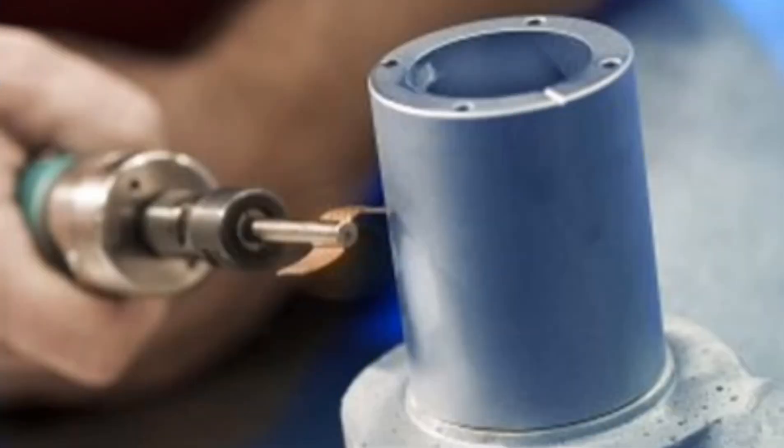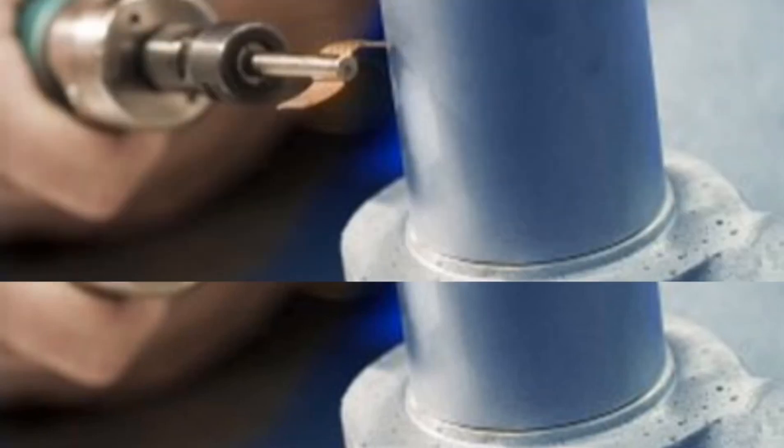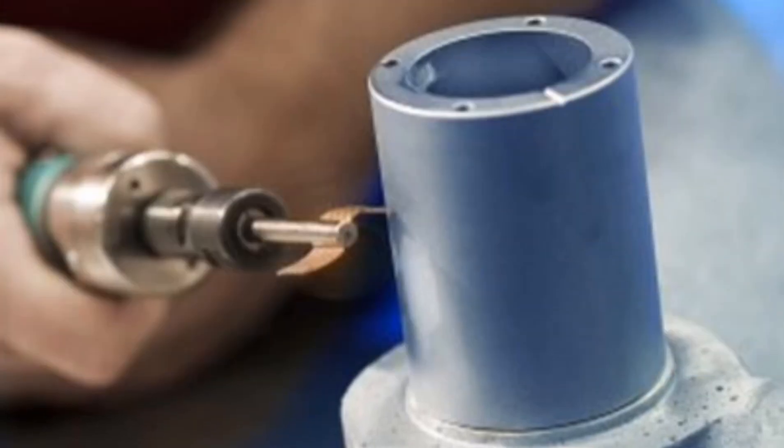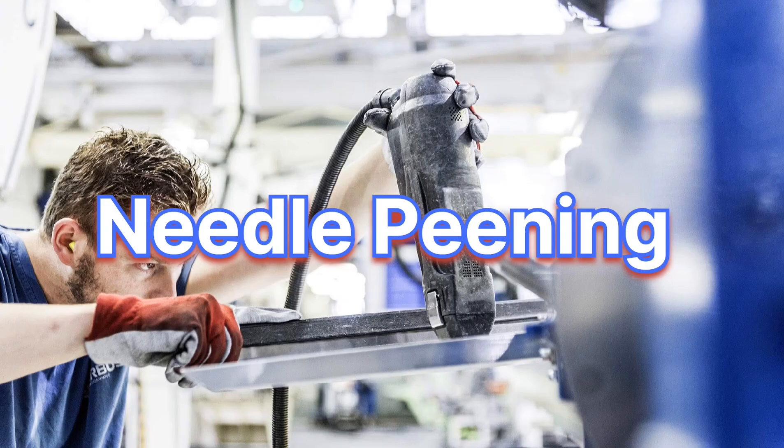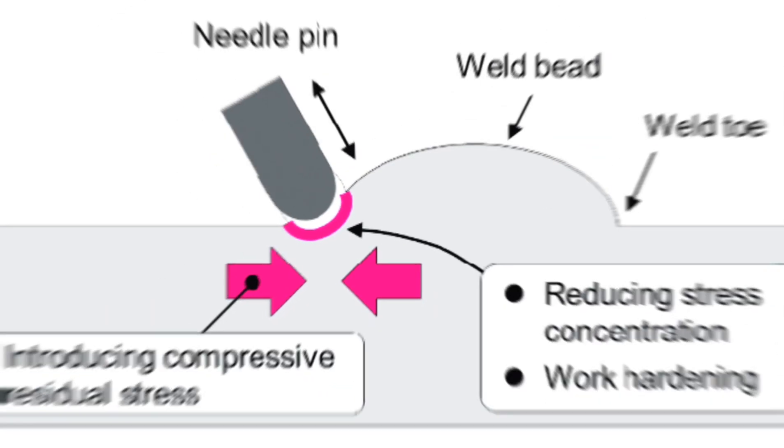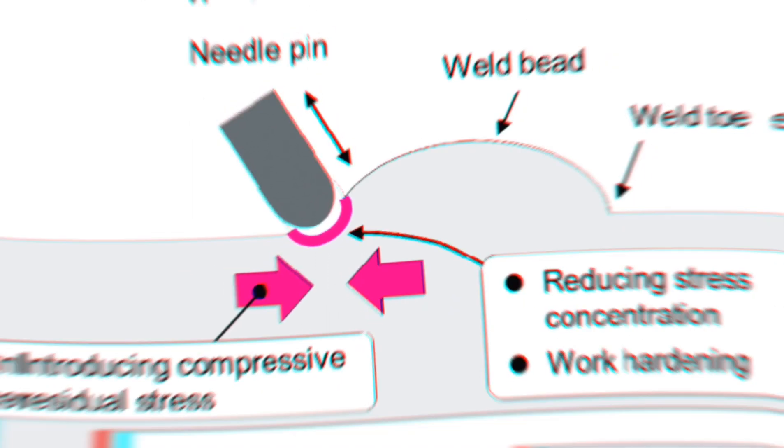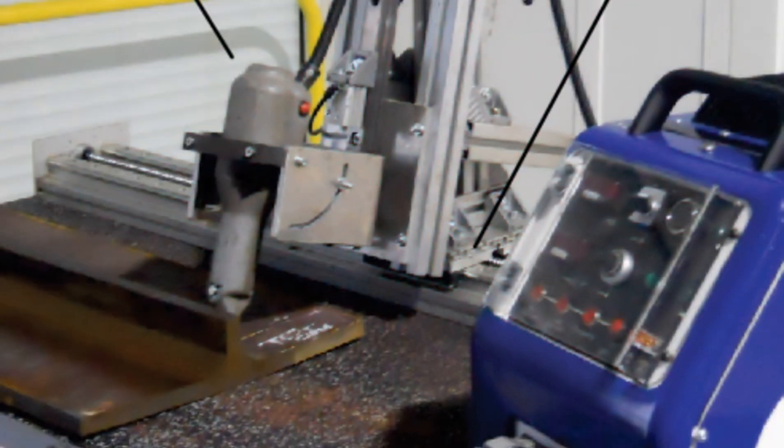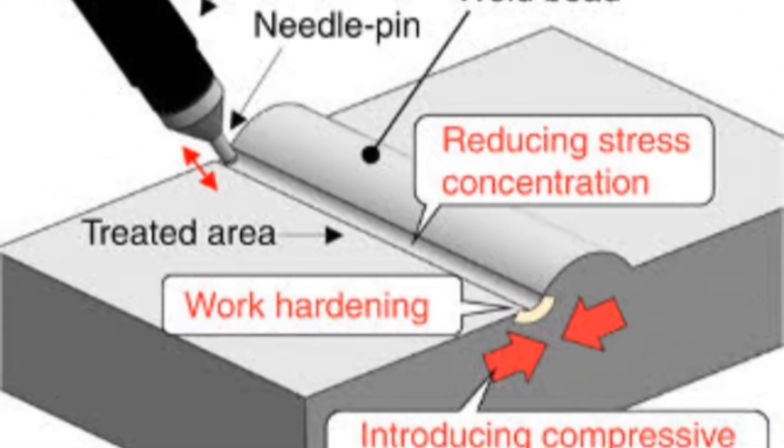The rotational speed of the spindle determines the energy applied to the weld surface. Needle pinning uses a particular descaling gun that uses multiple needles with a radial shaped head. The needles are hardened steel metal.